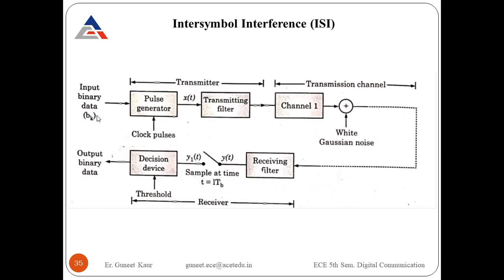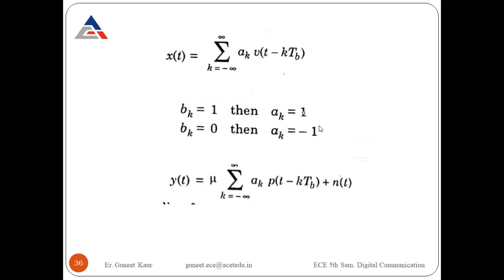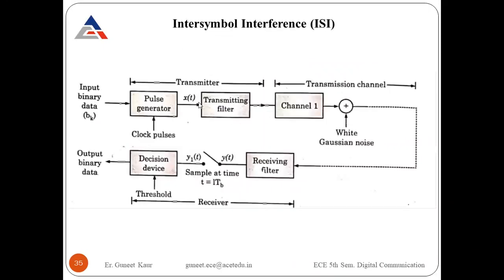If bk = 1 then ak = 1, and if bk = 0 then ak = −1 since we are using polar representation. The PAM signal x(t) is passed through a transmitting filter, and its output is transmitted over a transmission channel with impulse response h(t).